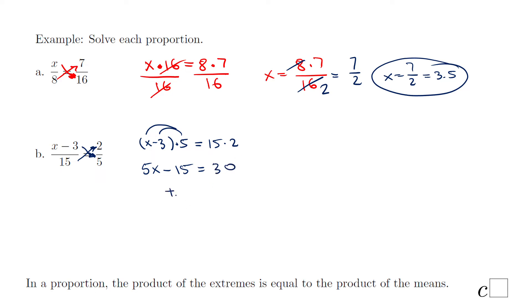My next step will be to add 15 to get rid of this minus 15. Don't forget to do the same thing on the other side. We have 5x equals 30 plus 15 is 45. The last step, divide by 5 to get rid of these 5. We have x equals 45 over 5, which can be simplified and that will be just 9.